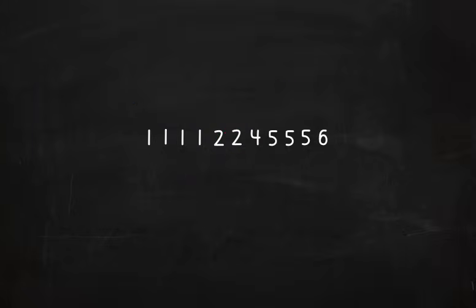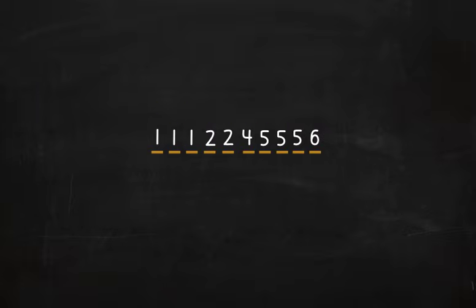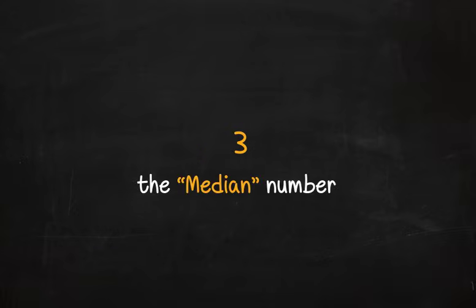You have become so good at math that you are probably asking this very good question. The middle number is the 6th number because there is an odd number of days. What if there were 10 days? Then there wouldn't be one middle number. In that case, the median would be the two middle numbers added together and then divided by 2. 2 plus 4 equals 6, 6 divided by 2 equals 3, so 3 is the median number.